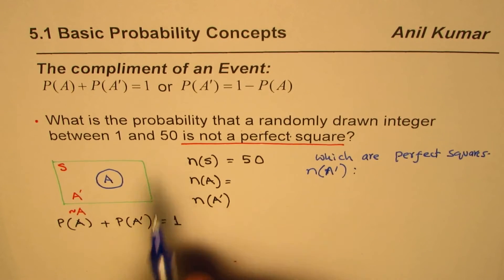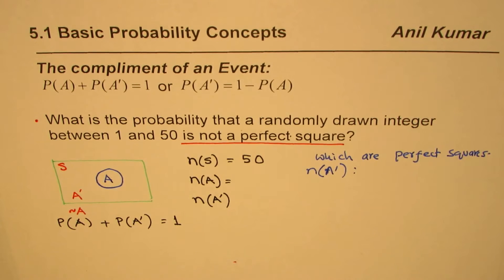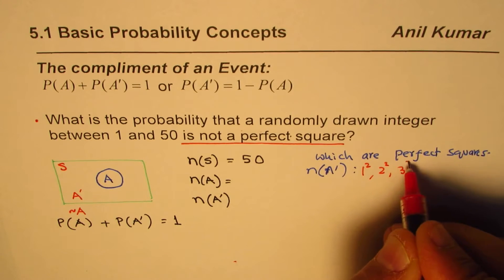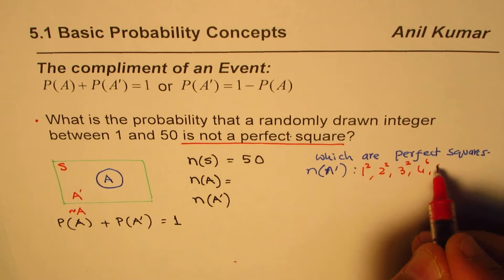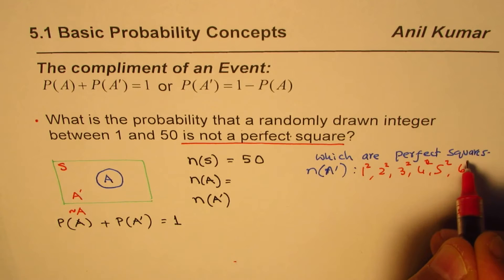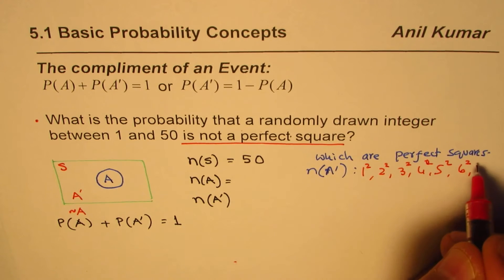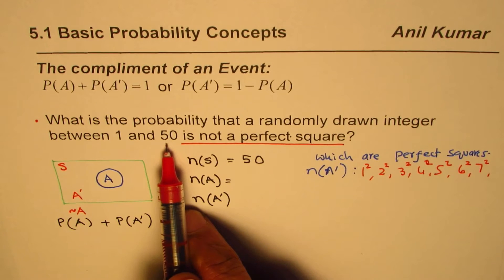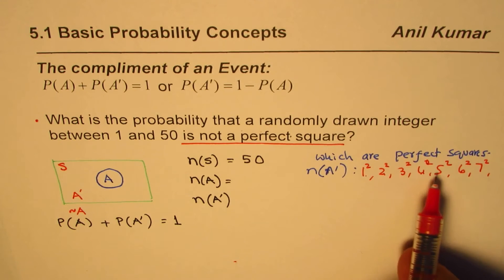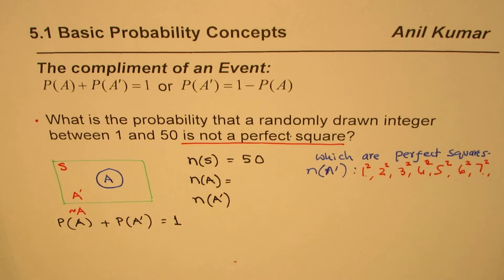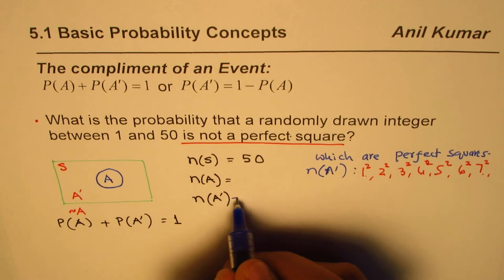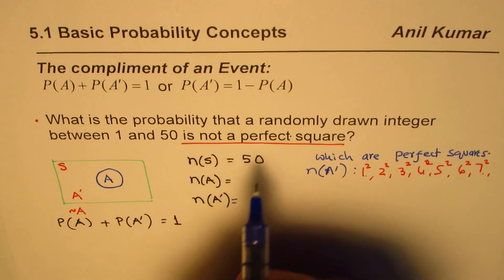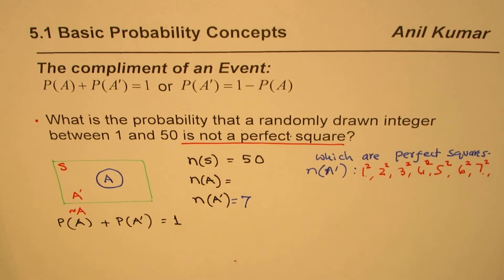It is easy to find the perfect squares from 1 to 50: 1 squared is 1, 2 squared is 4, 3 squared is 9, 4 squared is 16, 5 squared is 25, 6 squared is 36, 7 squared is 49, and 8 squared is 64. Since 49 is less than 50 but 64 is not, there are exactly 7 perfect squares.